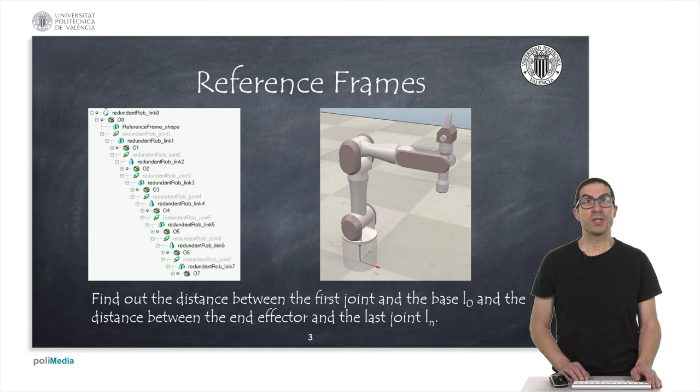I have included in the video description a file that includes a robot with seven degrees of freedom and eight reference frames associated with each of the robot links. Reference frames are objects named O0, O1, etc., and they are all positioned at the base of the robot, at the ground level, and they are aligned with the first joint to comply with the Denavit-Hartenberg method.